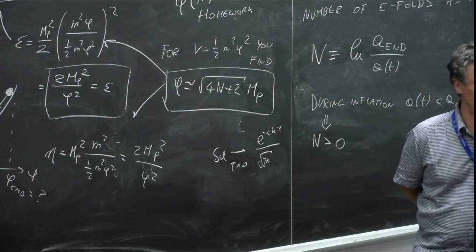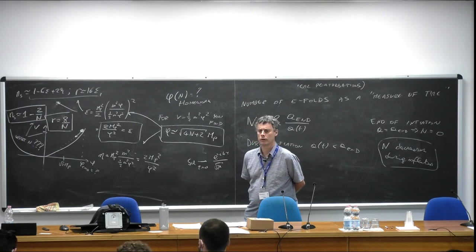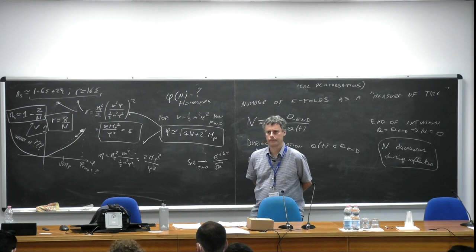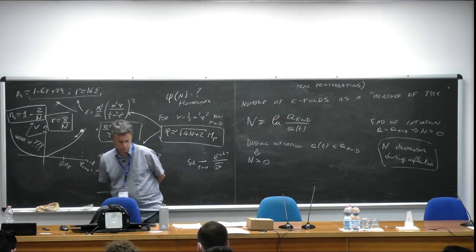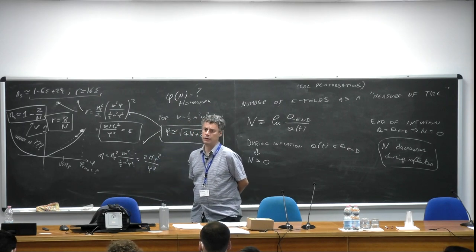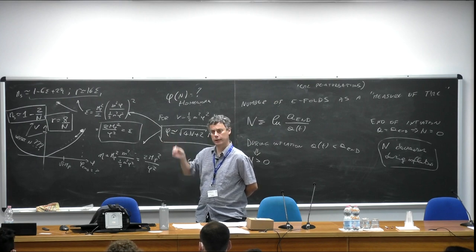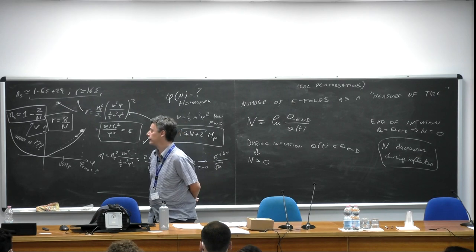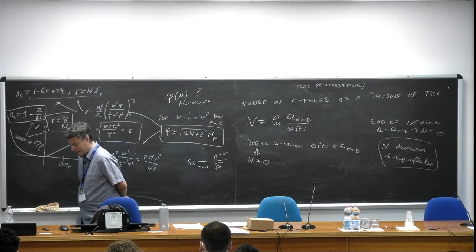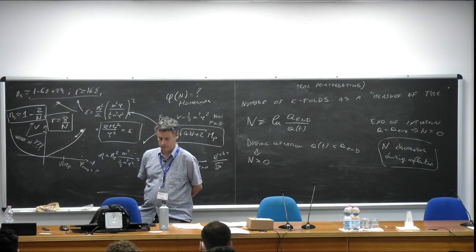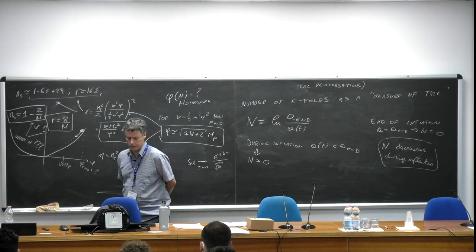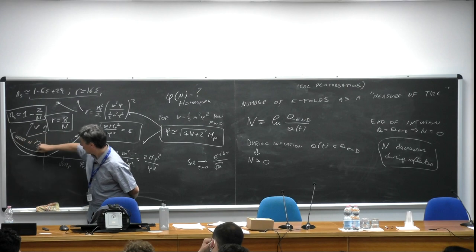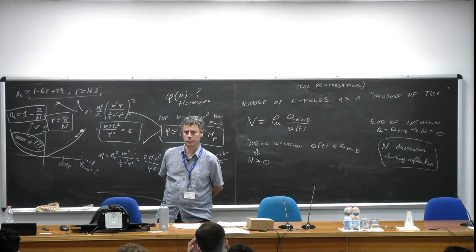Question about where inflation starts: there is a phase about quantum diffusion — if φ is very large, quantum perturbations become more important than classical motion, but this happens far away and doesn't concern us. The question of when inflation starts is badly posed in the phenomenological context because you probably cannot see experimentally when it started. The question we should ask is: what is the scale we see in the CMB and when were those modes produced? What value of N should I put when I compare with CMB experiment? That's what we're going to discuss now.